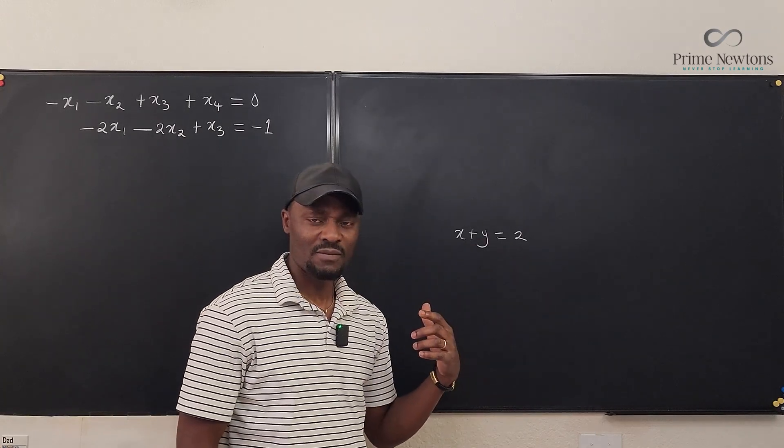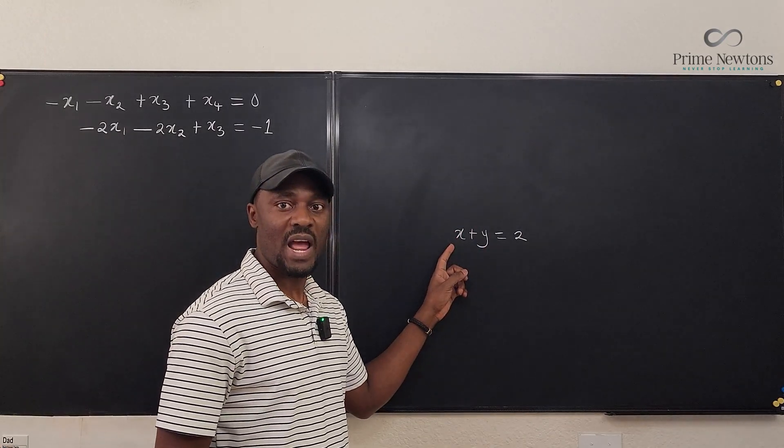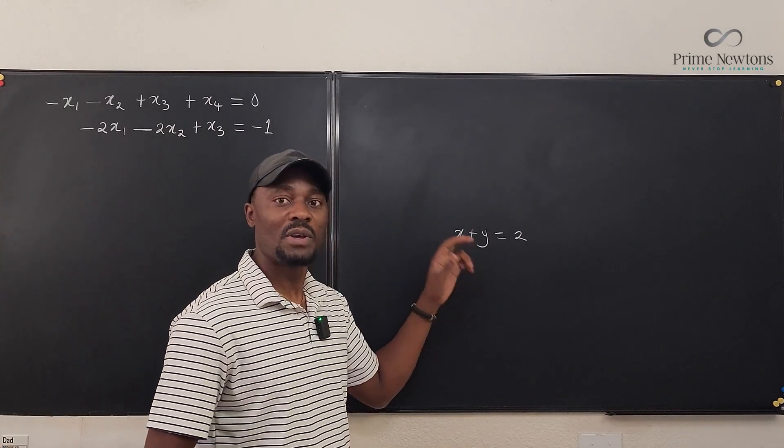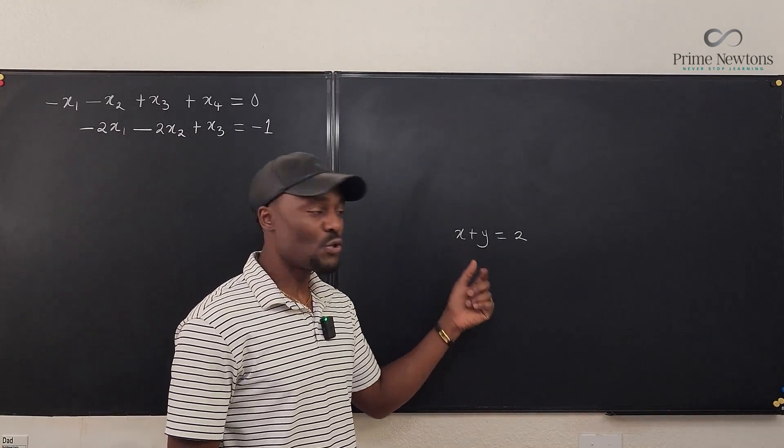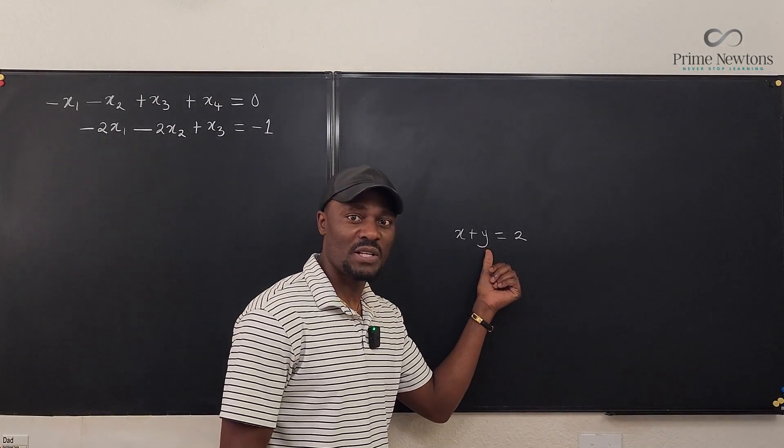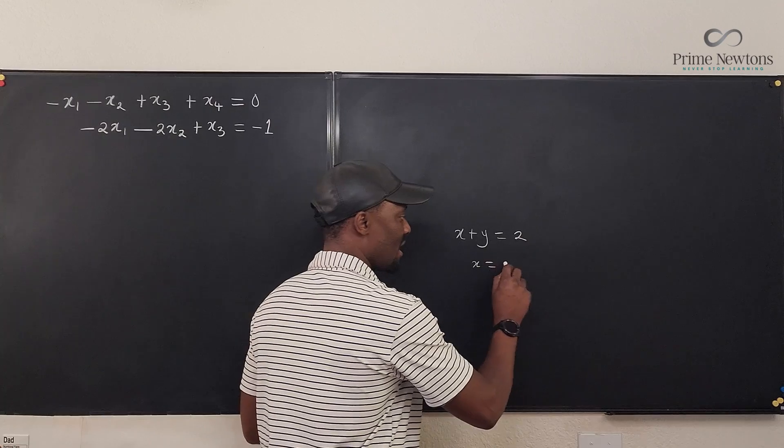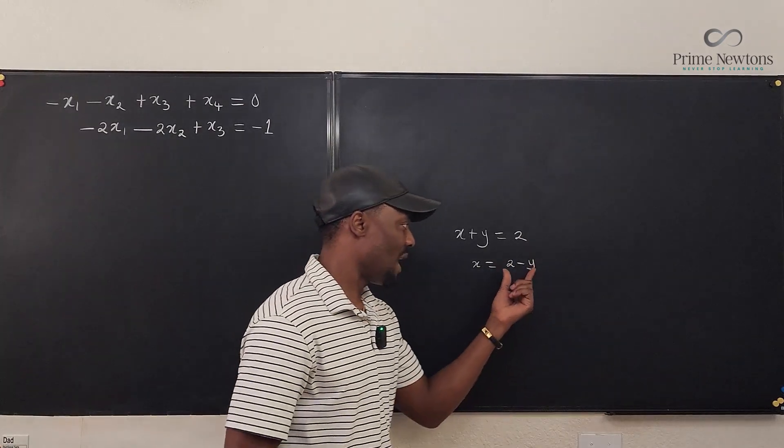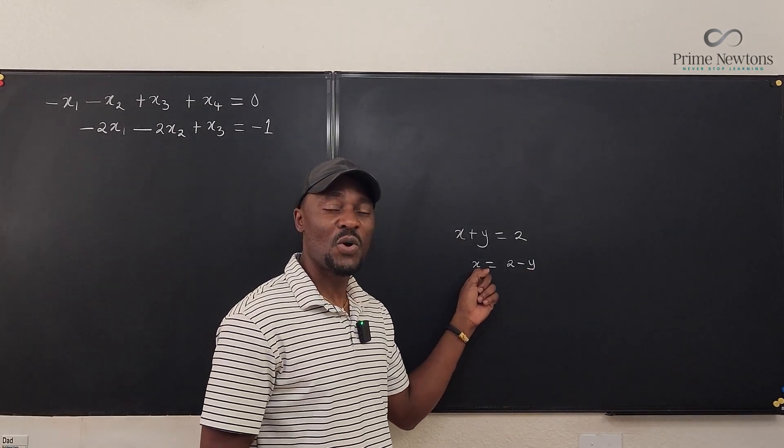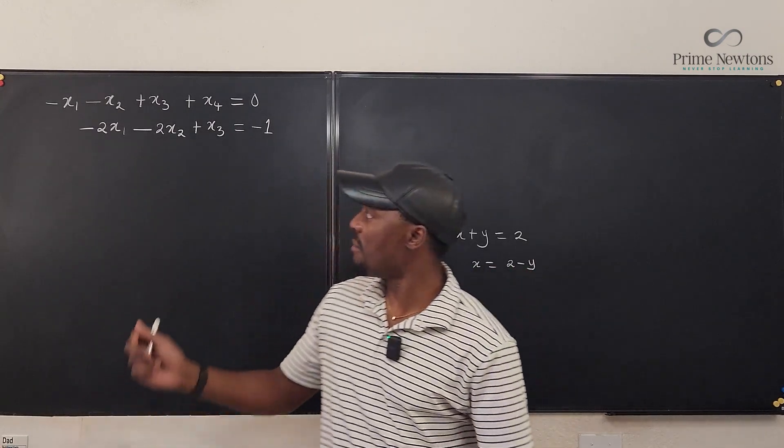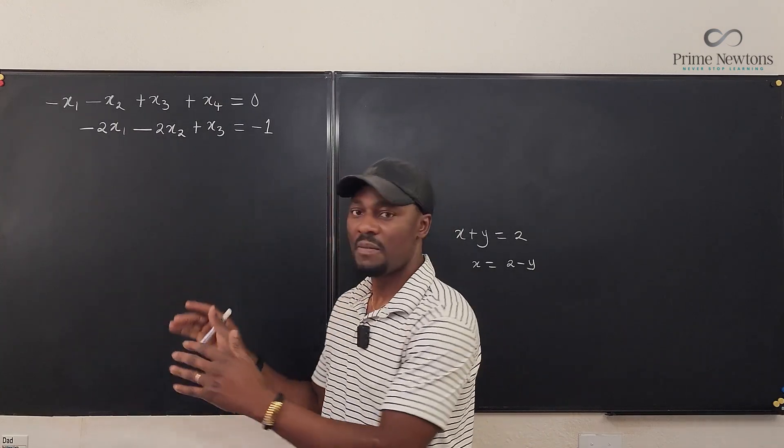But if this is all you get, then you can say, I'm going to assume that y is one, then I know what x is. x is going to be one. Or I'm going to assume that y is seven. Then I know that this is going to be negative five. So you can make this anything you want it to be. And you can make this in terms of this. So you can say x equals two minus y. So that this becomes a free variable that you can change. And this one takes its value on the basis of this. And that might be a similar situation here. So let's set this up and solve it.